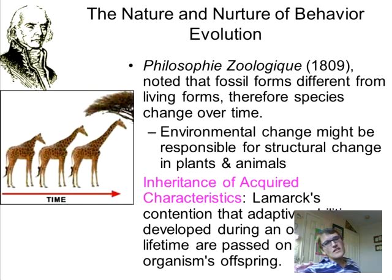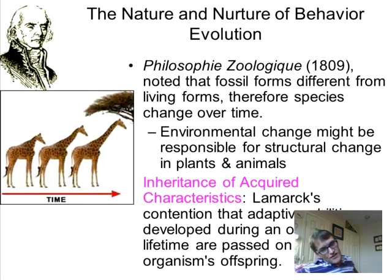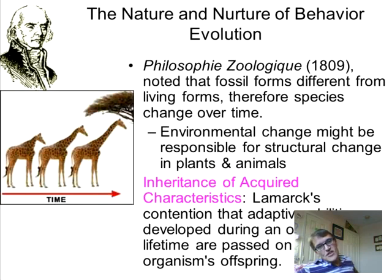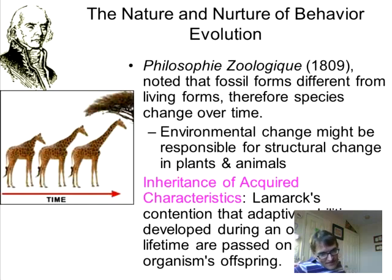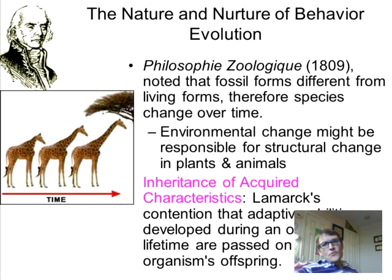Jean Lamarck proposed the idea of inheritance of acquired characteristics. For example, a giraffe is hungry and stretches its neck to reach a little bit higher. In the process of stretching, it makes its neck a little bit longer. And this change in neck length is then passed along to its children. According to this theory, characteristics acquired by the parents are inherited by the children. Now we have access to modern genetics and we see this is quite silly. Think of women in Ethiopia who put rings in their necks — when they have babies, those babies are not born with long necks. We do see this is a silly thing.